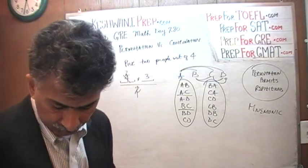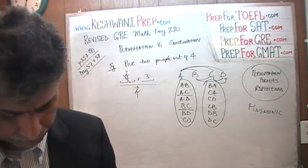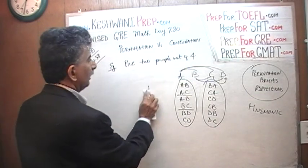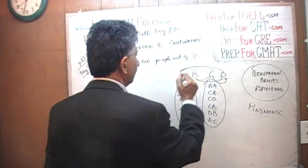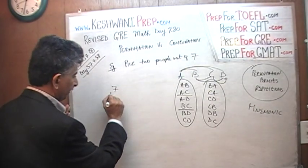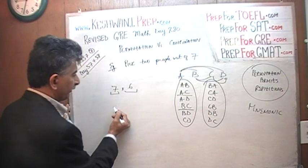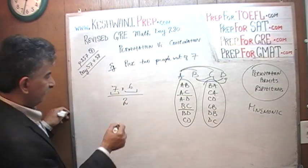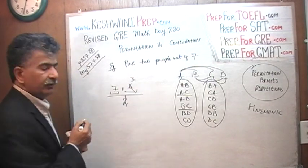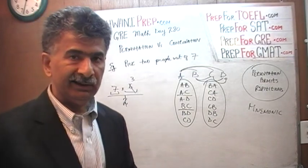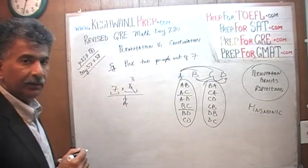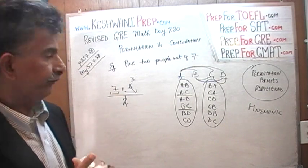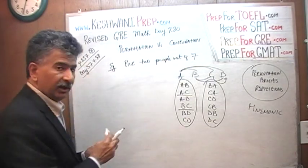Let's do one more. If we were to pick two people out of seven, the situation is the same: seven ways to pick a first person, six ways to pick a second person, and since everything is being repeated, we have half as many possibilities. The answer is seven times three — 21 different ways of picking two people when order does not matter — 21 combinations, and of course 42 permutations. Now let's make it a little more complicated.